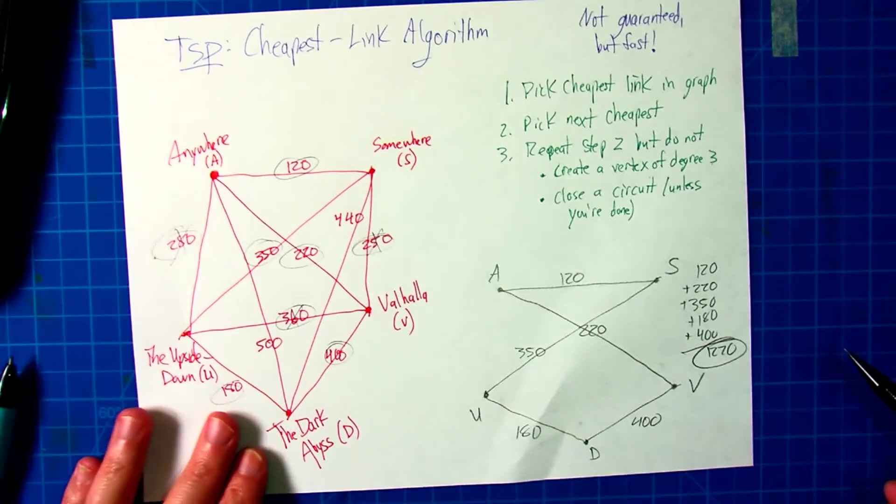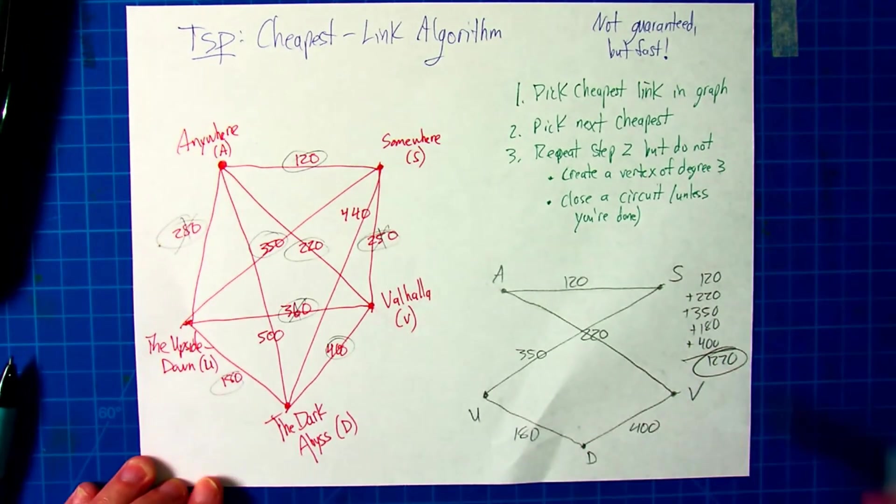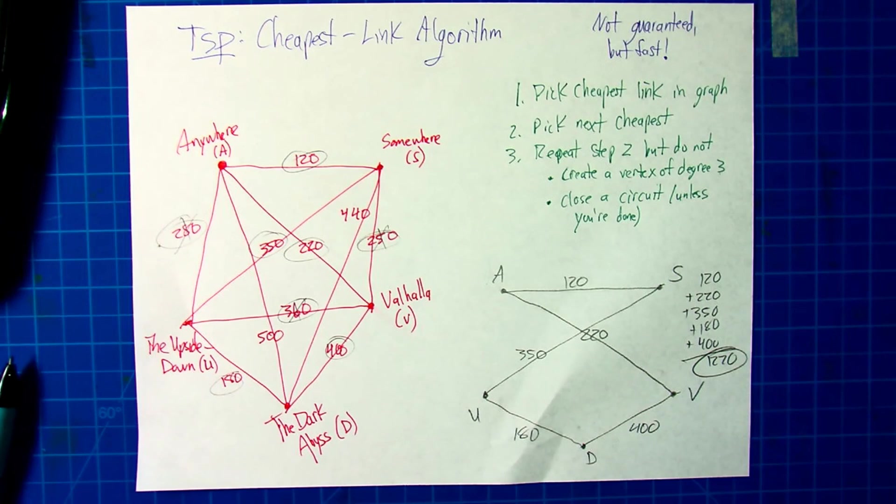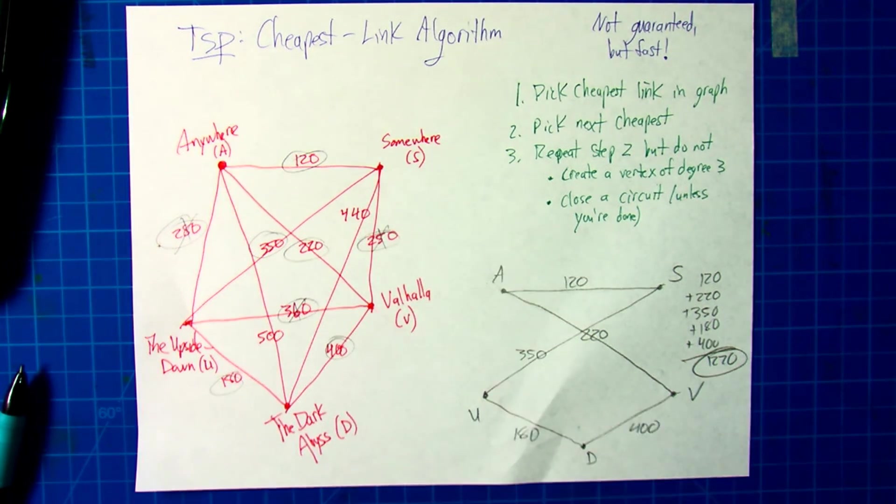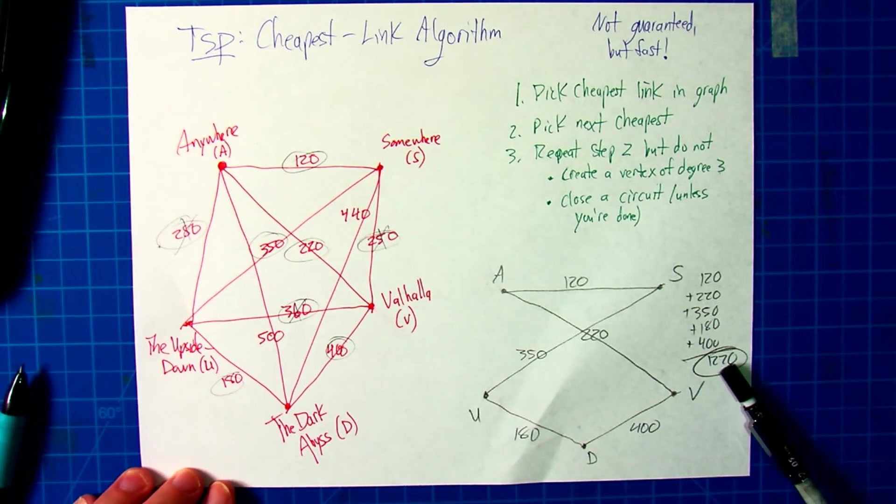So we don't even know if that is the best, but this is certainly much faster than trying every single combination, and it's even faster than doing the repetitive nearest neighbor because there we had to do five separate checks to find the one that was the lowest to compare to this. This got us a reasonably low price solution in a fairly short amount of time.